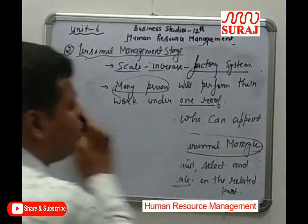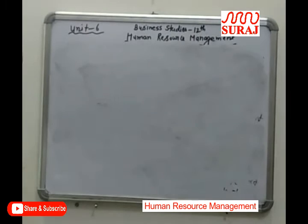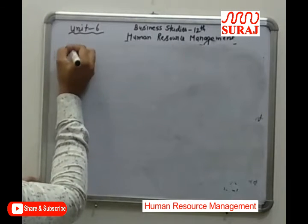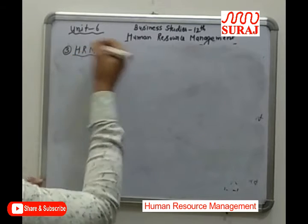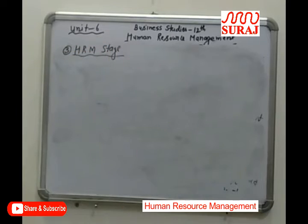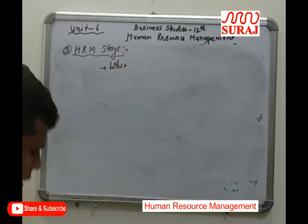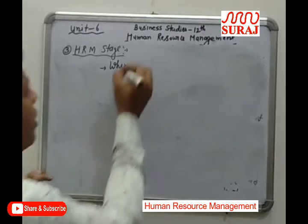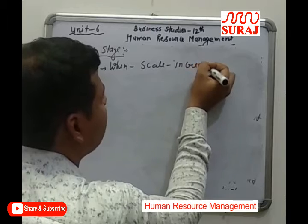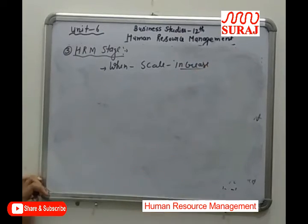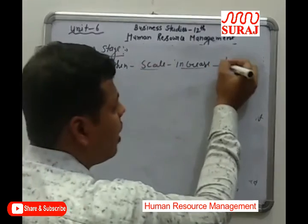The third stage of human resource management is the HRM stage, also known as the human resource management stage. After the factory system, when the scale of business increases further — moving from medium scale to large scale — we enter the HRM stage.